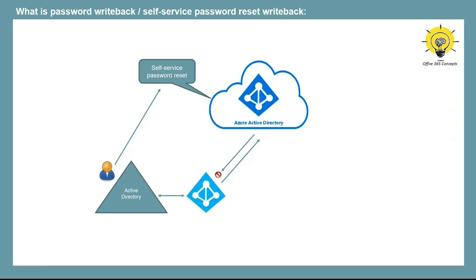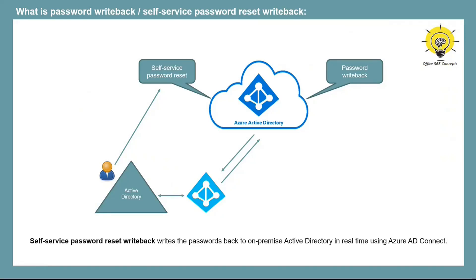Even if you are using pass-through authentication on-premise, the new password reset by the end user via self-service password reset will not be written back to on-premise. The user won't be able to log in with the new password because authentication is performed by on-premise Active Directory. This is where the password writeback feature comes in. Password writeback writes passwords from Azure Active Directory to on-premise Active Directory in real-time using Azure AD Connect when a user resets or changes their password.